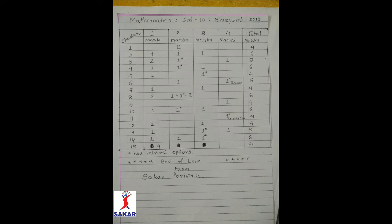Chapter 7: 1 question of 1 mark, 1 question of 3 marks, total 4 marks. Chapter 8: 2 questions of 1 mark, 2 questions of 2 marks — here you can see 1 plus 1, meaning 1 question is a single question and 1 question has an internal option — total 6 marks. Chapter 9: 1 question of 4 marks, this question is a practical sum, total 4 marks. Chapter 10: 1 question of 1 mark, 1 question with internal option of 2 marks, 1 question of 3 marks, total 6 marks.